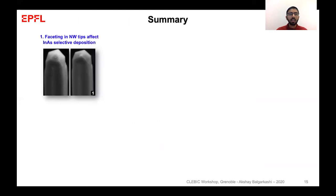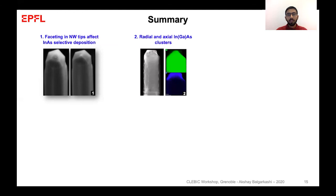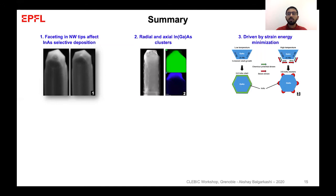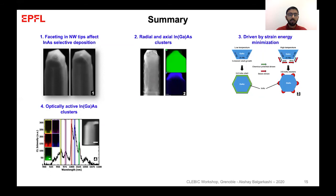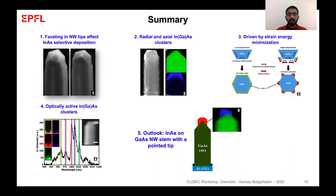To summarize: after gallium droplet consumption, the nanowire top facets have different morphologies which can affect the selective deposition of indium arsenide at the tip. Structural TEM characterization shows that radial and axial indium-rich clusters are present, and based on our growth conditions, we propose a model where strain is the main driving force for cluster accumulation on the sidewalls at high temperature. Optically, the clusters on the sidewalls are found to be optically active. As an outlook, we plan to look at indium arsenide segments on gallium arsenide nanowire stems with pointed tips, placed on the nanowire axis, and aim to achieve a high density of nanowires with pointed tips.